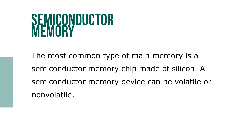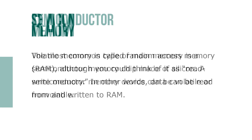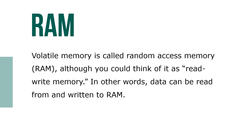The most common type of main memory is a semiconductor memory chip made of silicon. A semiconductor memory device can be volatile or non-volatile. Volatile memory is also called random access memory, or RAM, although you could think of it as read-write memory.